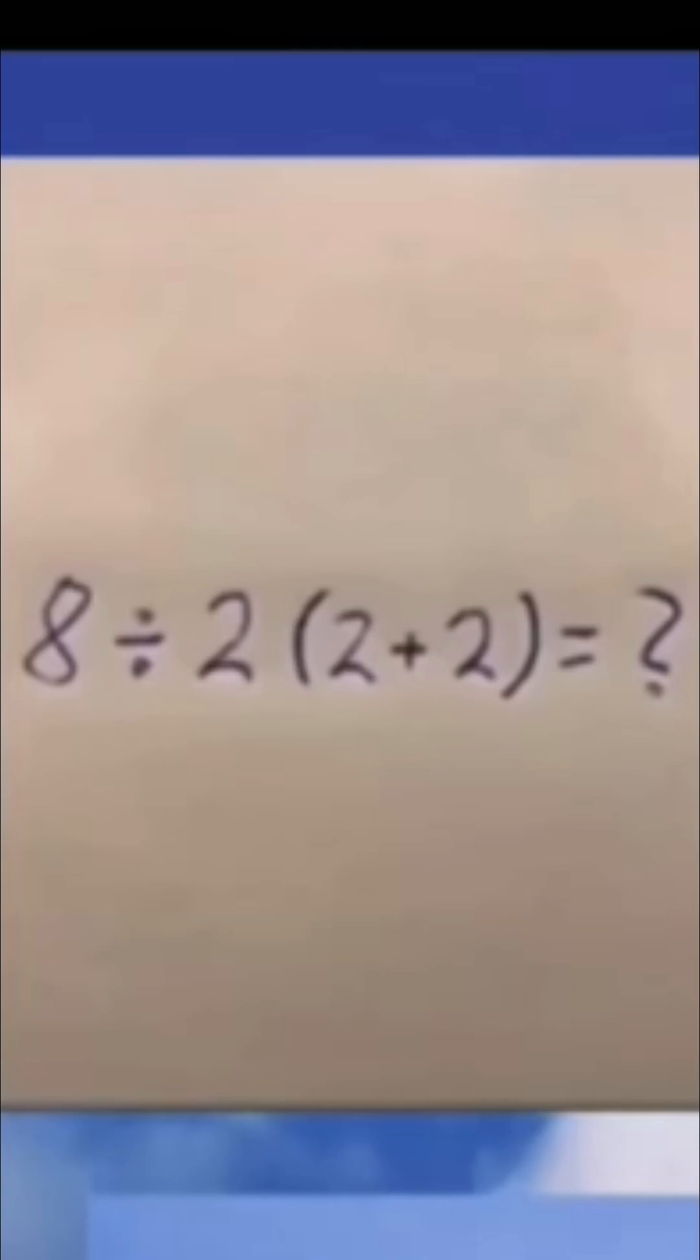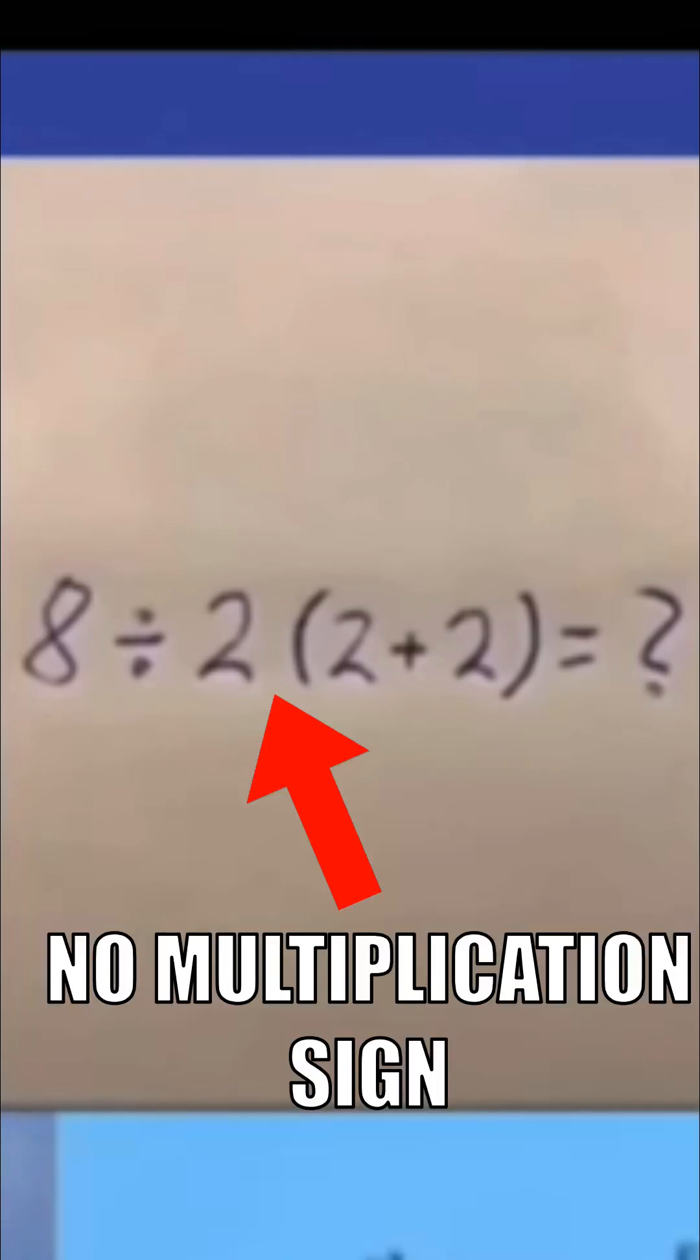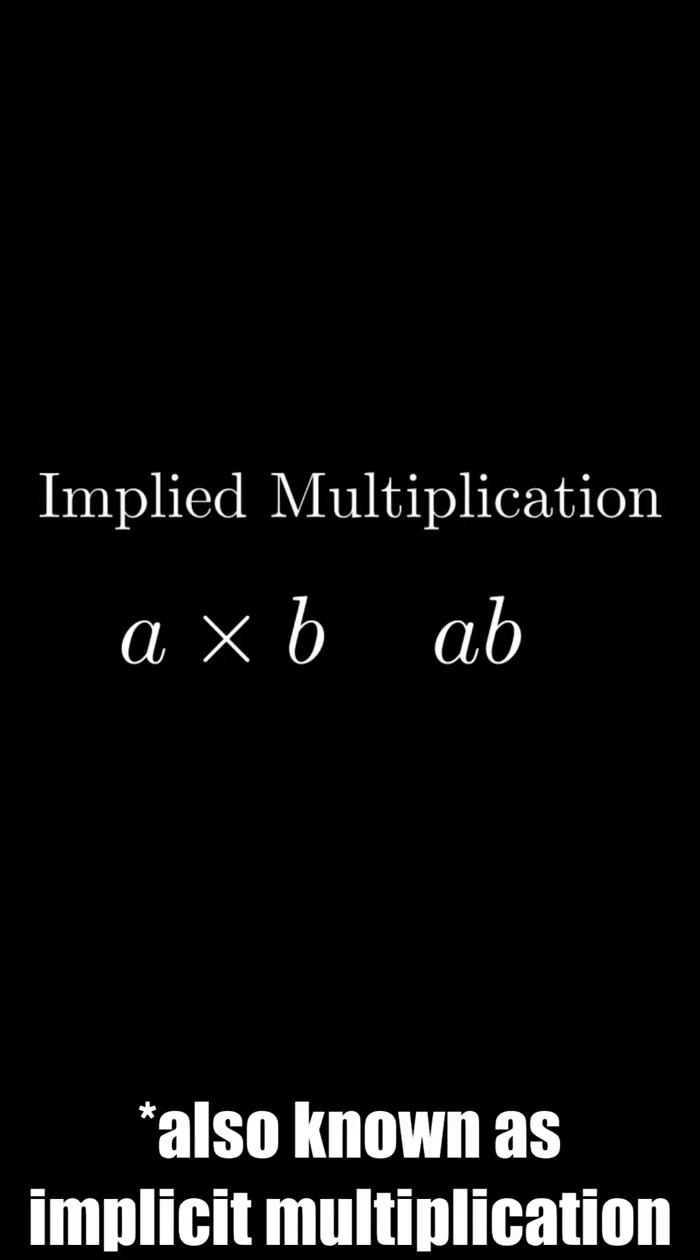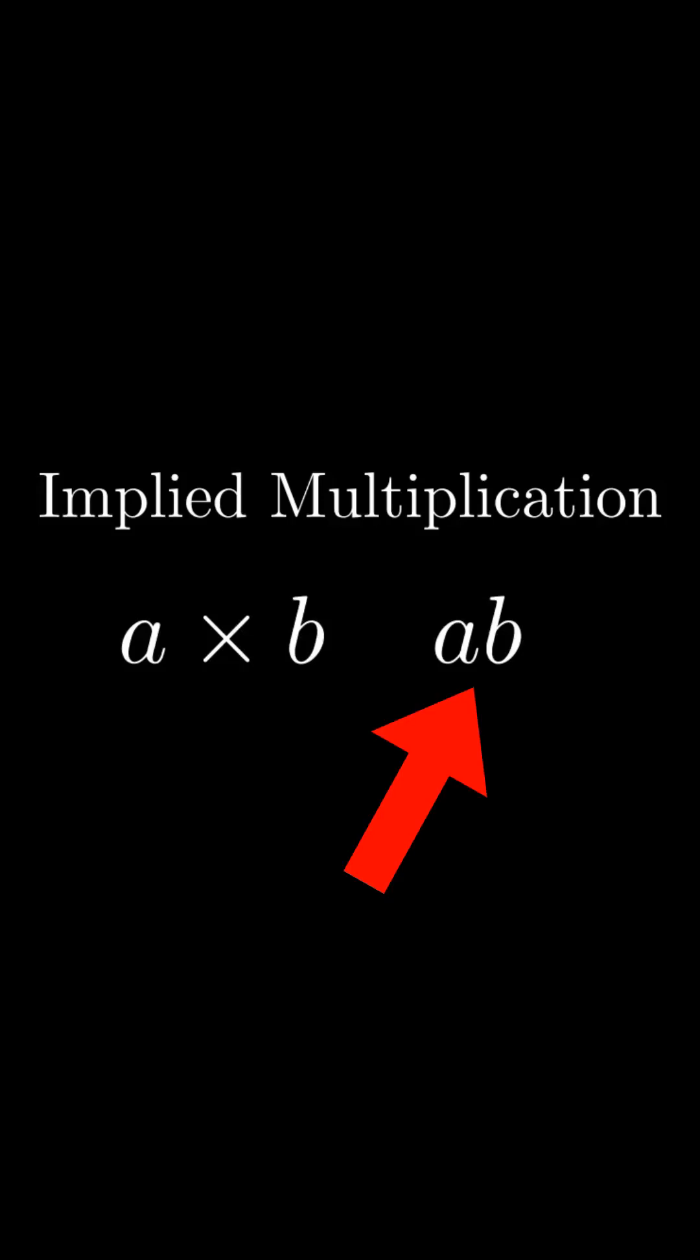However, I lied. These questions don't use a multiplication sign. They instead use implied multiplication, which is whenever you multiply by putting two numbers next to each other, where at least one number is either a variable or in parentheses.